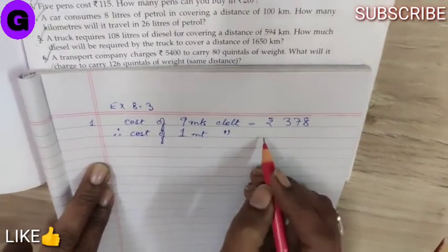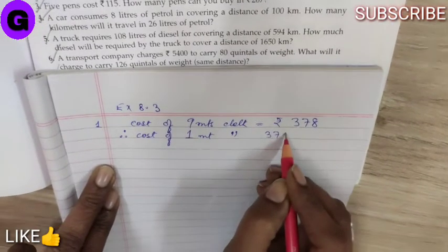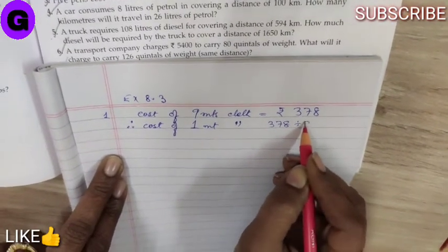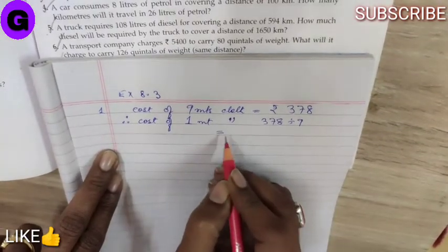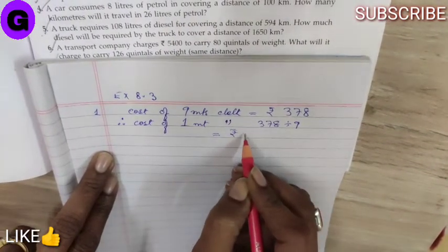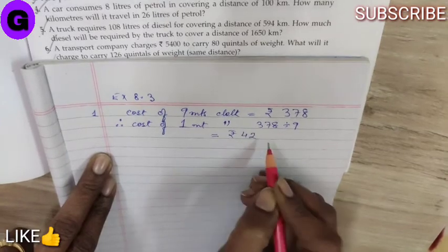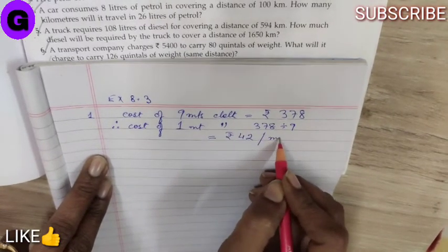The amount will be less. In that case, we have to divide this. So that is coming down to rupees 42 per meter.